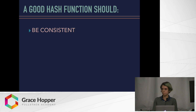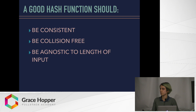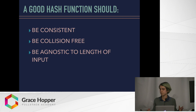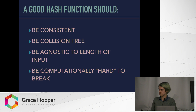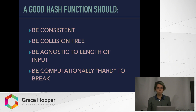A good hash function should be consistent — the same input should always produce the same output. It should be collision-free, meaning that different input should always produce different output. It should be agnostic to the length of the input, so it doesn't matter if your string is 5 characters long or 500 characters long — if the hashing function is supposed to produce a 16-character hash, it will always produce a 16-character hash. And it should be computationally hard to break, meaning that with modern computers it should be practically impossible to decode. An aside: if we ever figure out quantum computing, we would very easily be able to break all existing hash functions, but quantum computers would also offer different options for encoding as well.